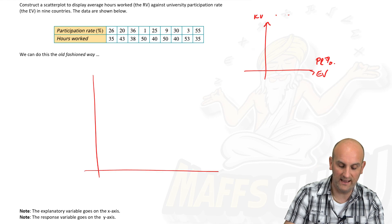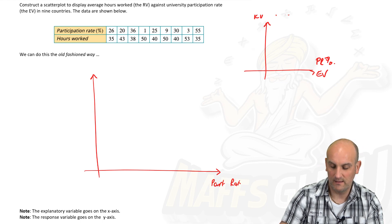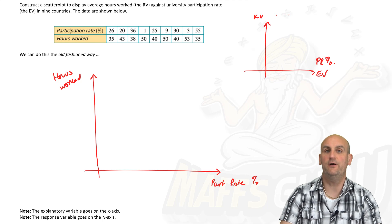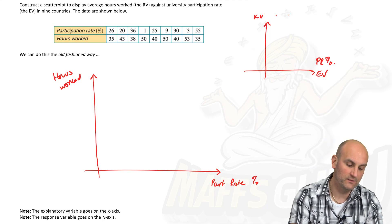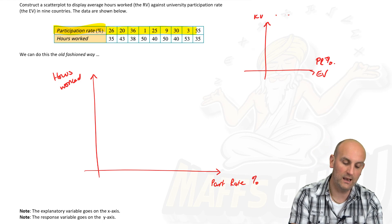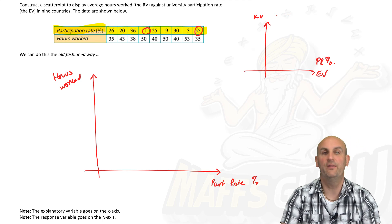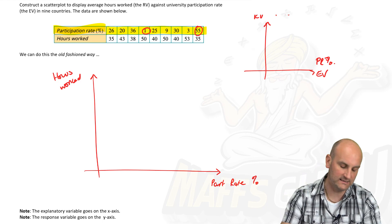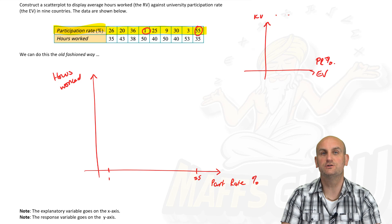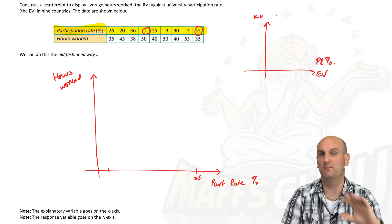First things first, if we remember the EV goes on the bottom there and the response variable goes up there. And what did they say the EV was? It was participation rate in percent and the response variable was my hours worked. Now I'm not going to be able to do this very accurately here. I'm just going to talk around the key points of drawing this thing. The first thing is you're going to make sure that your axes are large enough for the scale that you need. You are going to write on a participation rate and you're going to write percent and up the side you are going to write hours worked.